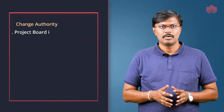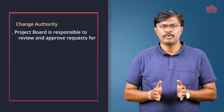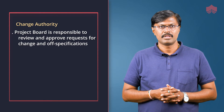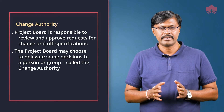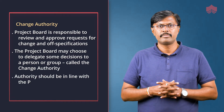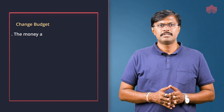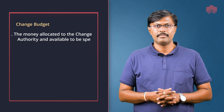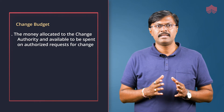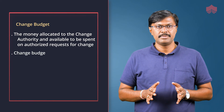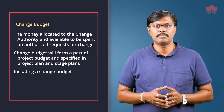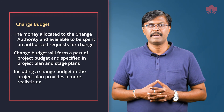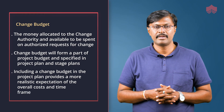Change authority: the project board is responsible to review and approve requests for change and off specification. The project board may choose to delegate some decisions to a person or group called the change authority. Authority should be in line with the project management and control requirements. Change budget is the money allocated to the change authority and available to be spent on authorized requests for change. Change budget will form part of the project budget and is specified in the project plan and stage plans. Including a change budget in the project plan provides a more realistic expectation of the overall cost and timeframe of the project.